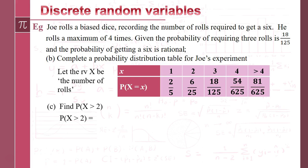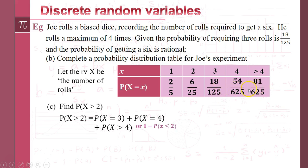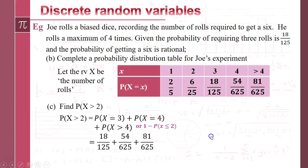Part C: probability that x is greater than 2. Greater than 2 doesn't include 2, so we're looking at the probability of x equals 3, x equals 4, and the probability of x is greater than 4. Alternatively, you could do 1 minus the probability that x is less than or equal to 2. The answer is 9/25 — you can check that 1 minus those first two probabilities added together does equal 9/25.